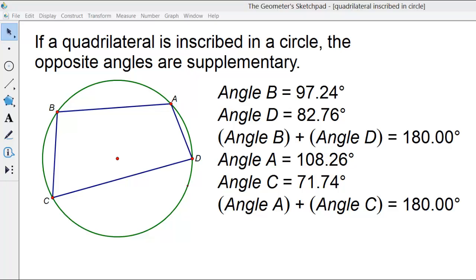In this video we'll be looking at a quadrilateral inscribed in a circle. A quadrilateral inscribed in a circle means that the vertices of the quadrilateral are points on the circle.